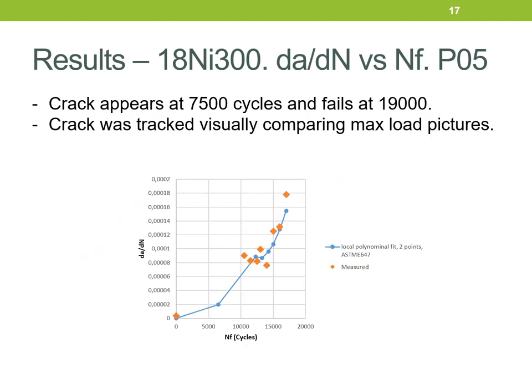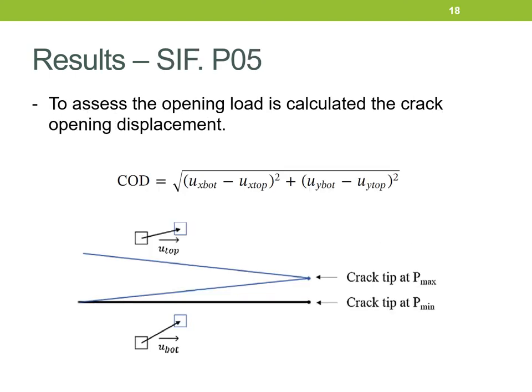The crack growth rate versus number of cycles obtained for sample five is shown here. The crack was detected at 7,500 cycles and failure occurred at 19,000 cycles. The crack was tracked visually by comparing the maximum load pictures. The next step in this study will be the effect of an overload on the crack growth rate, which produces a delay in fatigue life. The crack opening displacement was estimated from DIC measurements taken 0.3 mm behind the crack tip, and displacement data from above and below the crack were used to compute COD. COD measurements were derived from the external surface of the specimen, and since the specimen thickness in the crack region is small, no large differences are expected across the thickness.